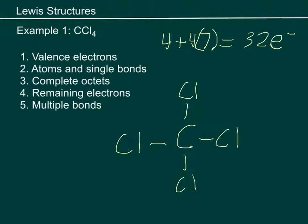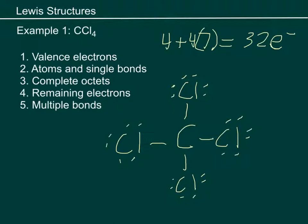Now the next step is to complete the octets on the outside atoms. So I'm going to draw in pairs — 2, 4, 6 on each chlorine. Now doing a quick count-up: you can see there's eight here — two here, two here, two there, that's six, and then two in that bond, so that's eight. Another eight is 16, another eight is 24, another eight is 32. We're supposed to have 32, and we have 32.